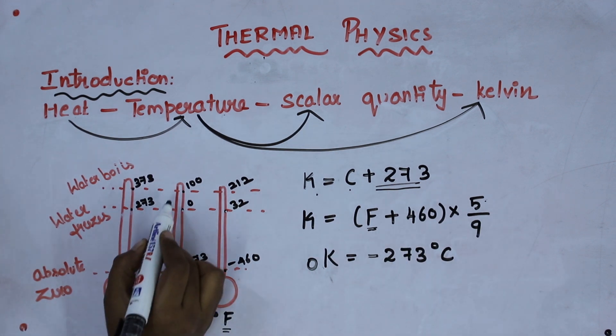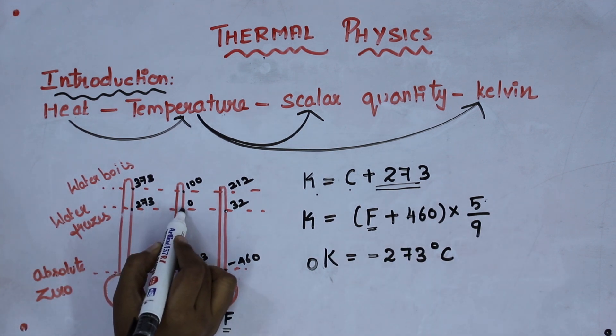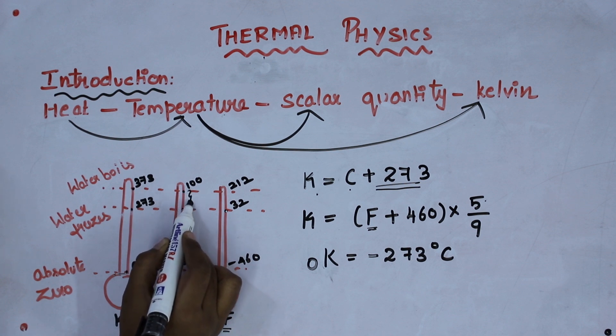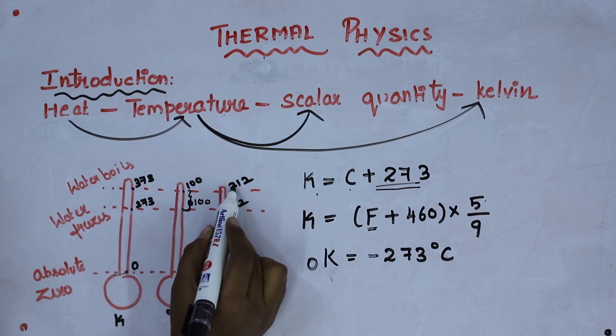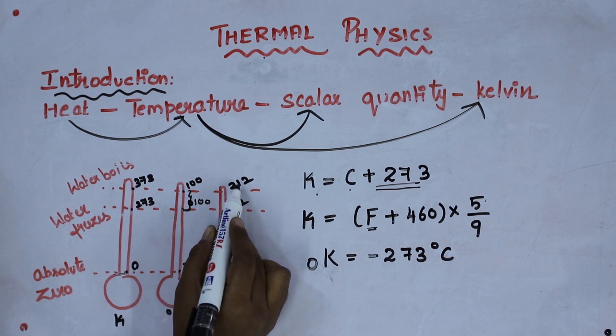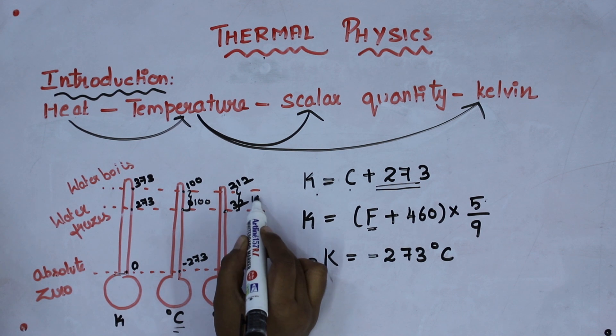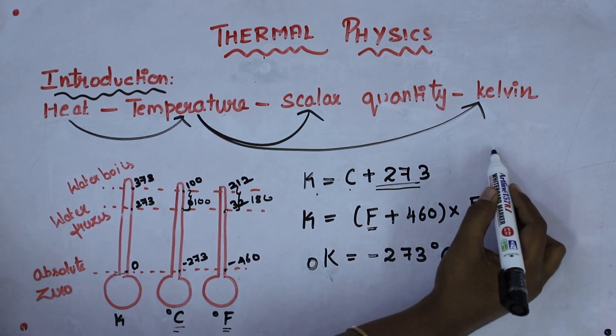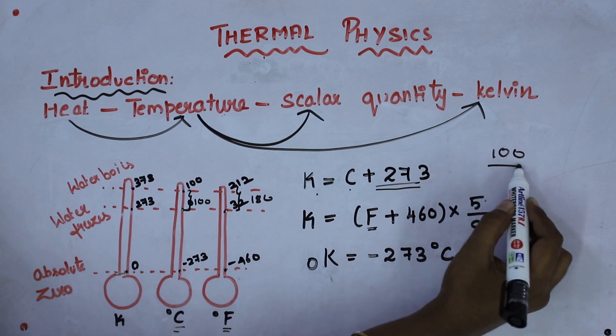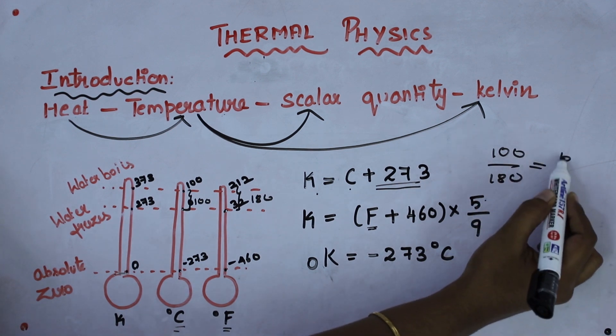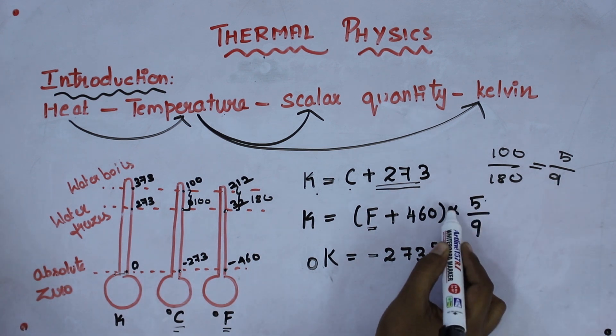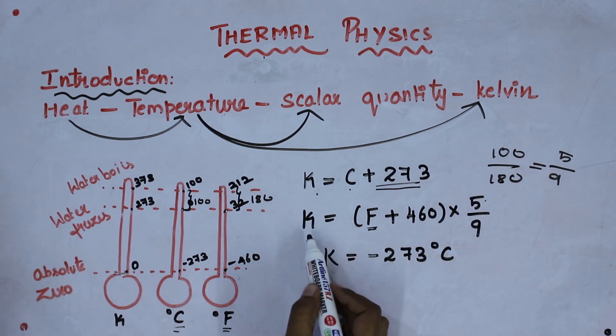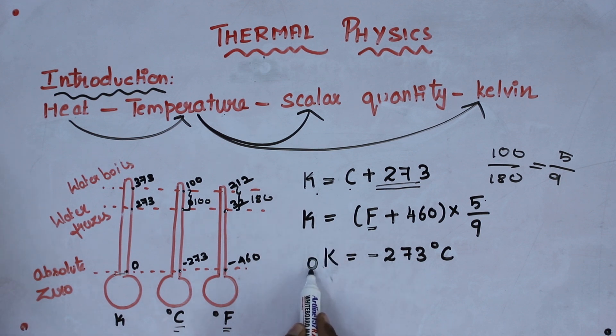The 5 by 9 has come from, you can see 0 and this is 100, so the difference is 100. And here 32 to 212, if you subtract you will get the value as 180. So if you divide 100 by 180, if you simplify this you will get the answer as 5 by 9. I am multiplying 5 by 9 with this so that you will get the value of Kelvin. This is 0 Kelvin. For 0 Kelvin, what is the value of the degree Celsius? It is minus 273 degree Celsius.